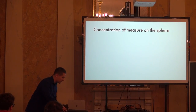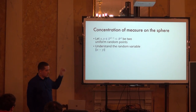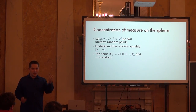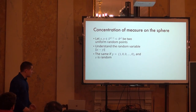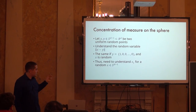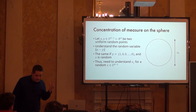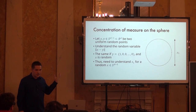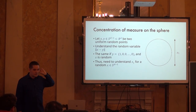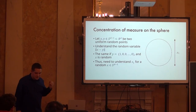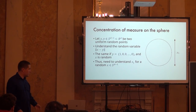Now we arrive at concentration of measure on the sphere. The distance between two random points is determined by the first coordinate of one of them, given that both are on the sphere. So we need to understand the distribution of the first coordinate of a random point on the sphere. We started with random points on the sphere, used union bound to reduce to two points, fixed one point, and now we just need to understand the first coordinate of a random point on the sphere.